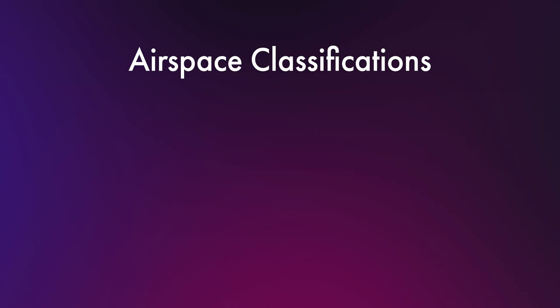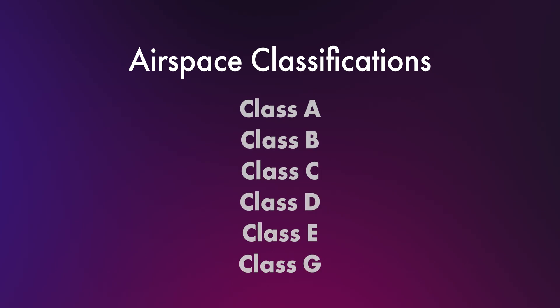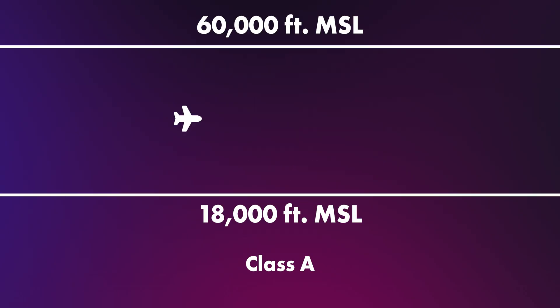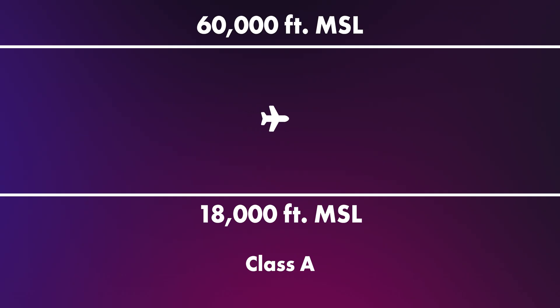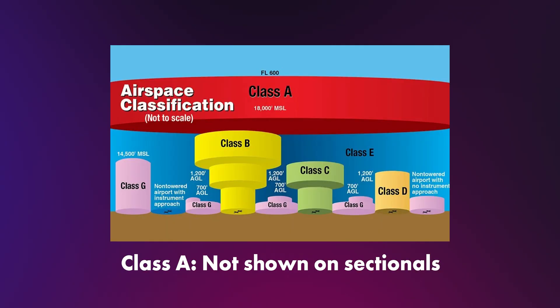Let's talk about airspace classifications. The National Airspace System has six classes of airspace: A, B, C, D, E, and G. Class A starts at 18,000 feet MSL and goes up to 60,000 feet MSL. This is airline territory — you'll never fly a drone here, and it's not shown on sectional charts.